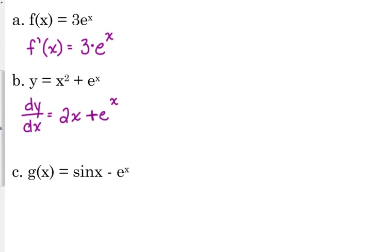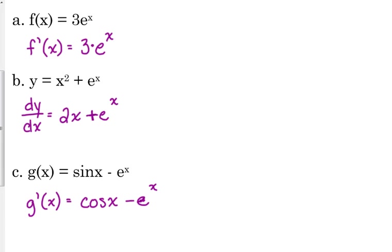We can combine e to the x with trig functions. If g of x equals sine of x minus e to the x, the derivative of sine is cosine, the derivative of e to the x is e to the x, and there was a minus sign in front, so just bring down the minus. So g prime of x is cosine of x minus e to the x.